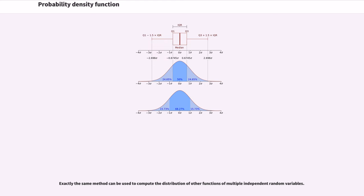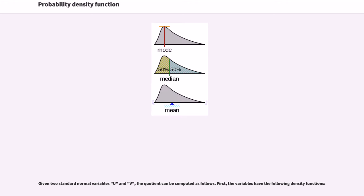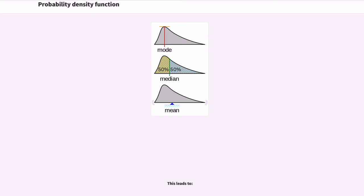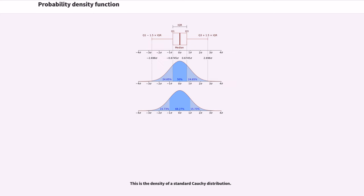Exactly the same method can be used to compute the distribution of other functions of multiple independent random variables. Given two standard normal variables U and V, the quotient can be computed as follows: the variables have standard normal density functions, we apply the transformation described above, and this leads to the density of a standard Cauchy distribution.